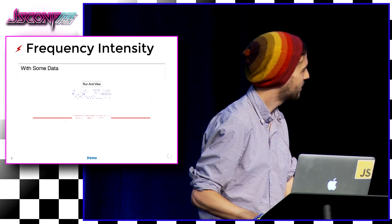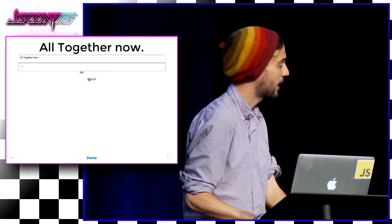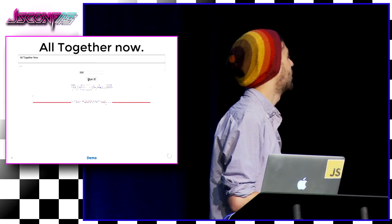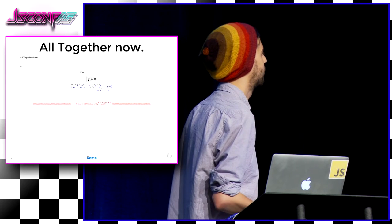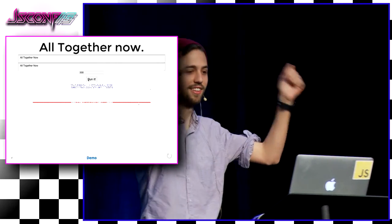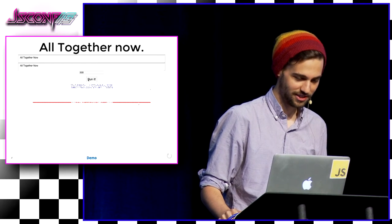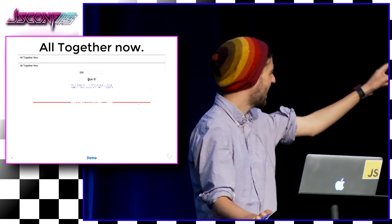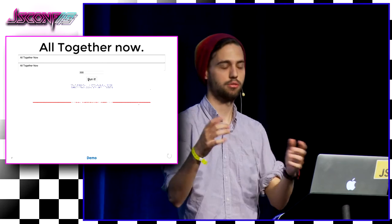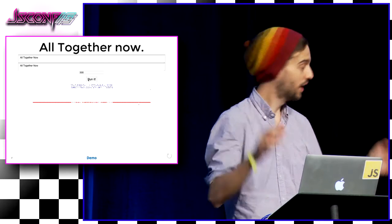Let's put it all together. I'm going to send this at 300 baud. It worked. I'm sending text, encoding it in audio, getting that audio, getting it out of the waveform, decoding the binary, and putting that back to text on the screen. And it works.